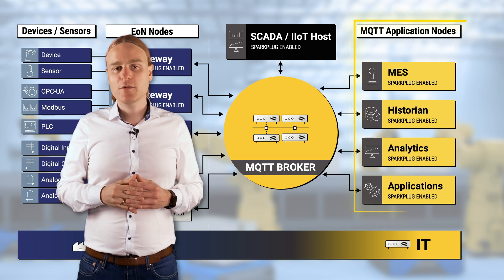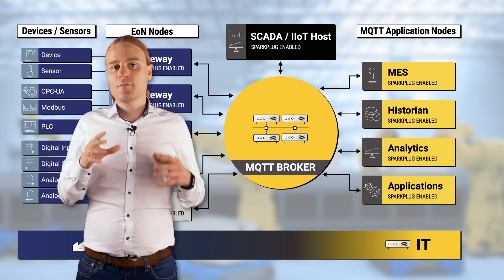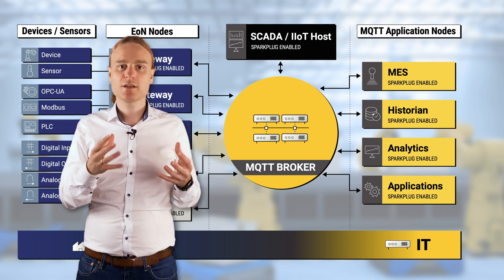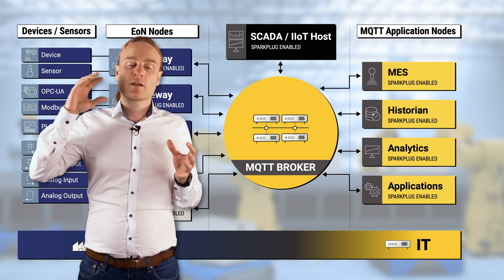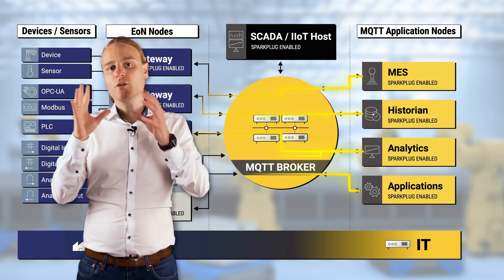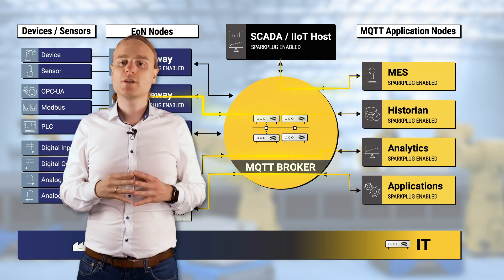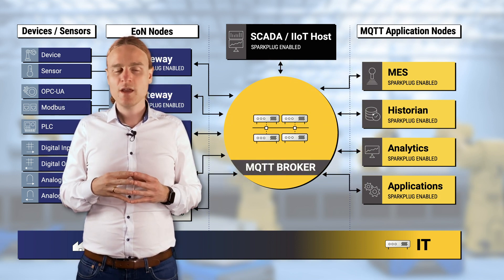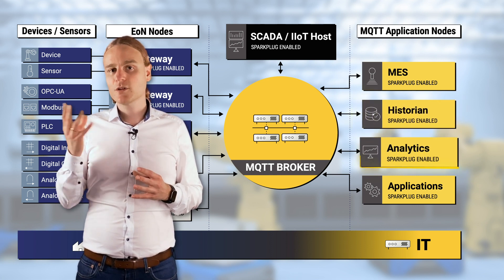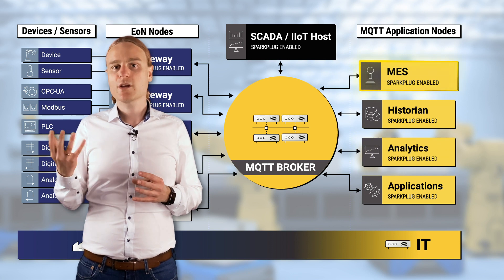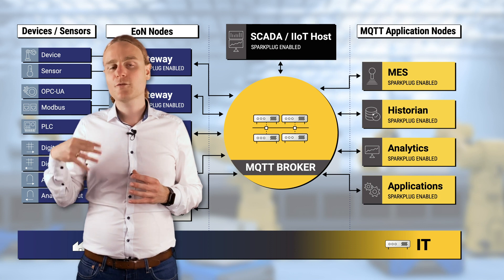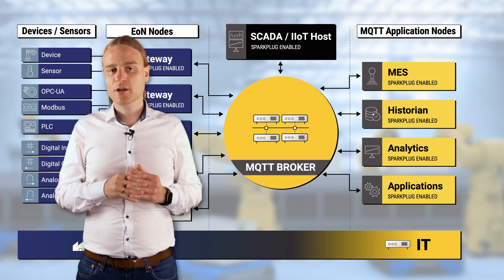Number four: MQTT application nodes. Besides the things you have on the OT side — PLCs, devices, sensors, and gateways — you usually also have systems that are interested in the data produced but also want to send data back into the MQTT Sparkplug infrastructure. Application nodes could be historians, analytics systems, manufacturing execution systems, or even ERP systems directly. There are many different technologies you want to bring into a Sparkplug infrastructure.